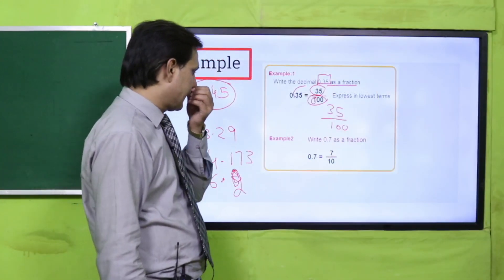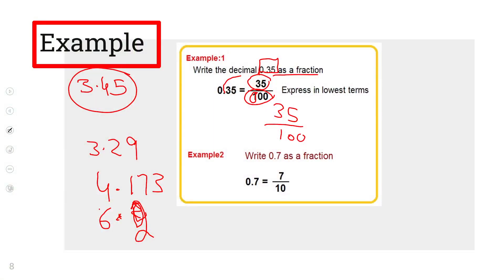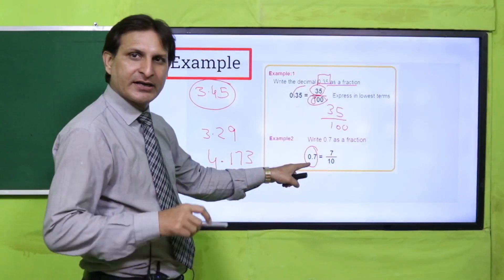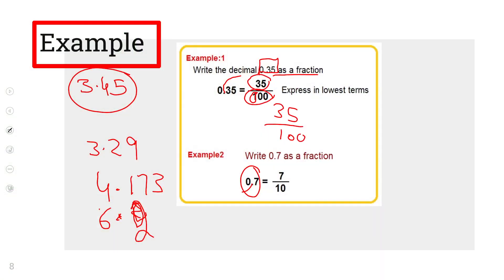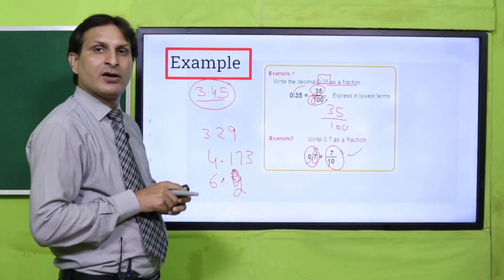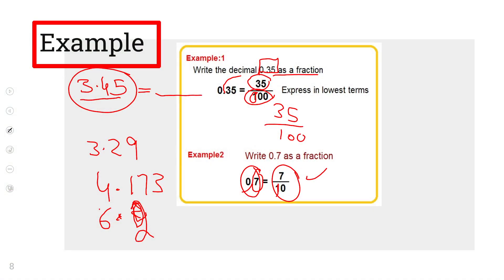Similarly example two: zero point seven को fraction में write करना है। यहां zero point seven में point को move किया — denominator में one आ गया और decimal places one है तो zero लगाया — seven over ten। Similarly three point four five में: point के बाद two digits हैं तो denominator में one के साथ two zeros लगाए — three four five over hundred।